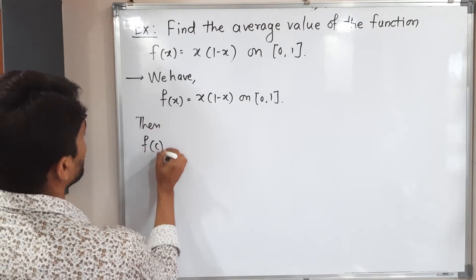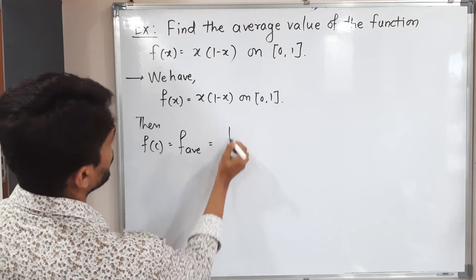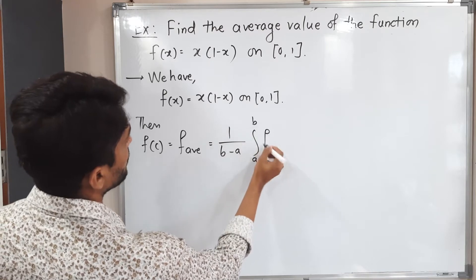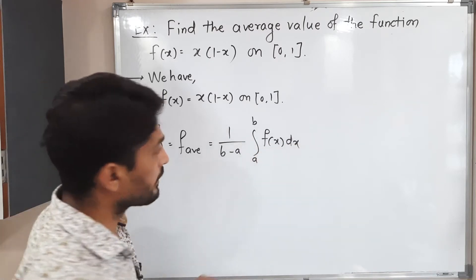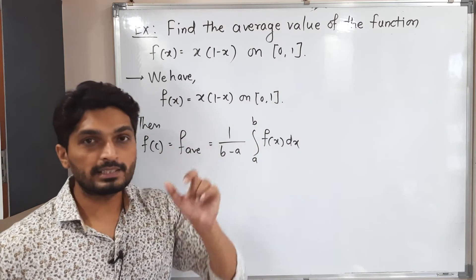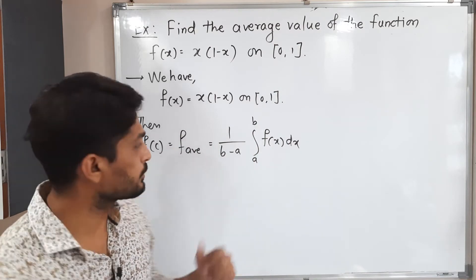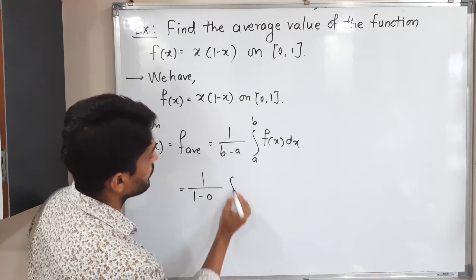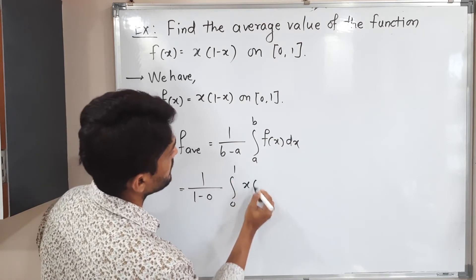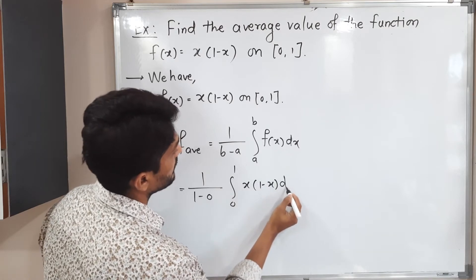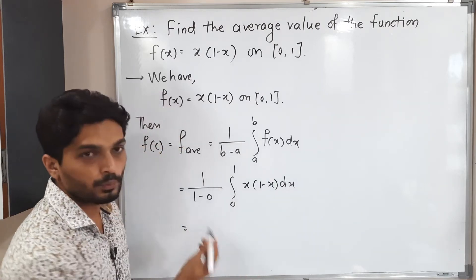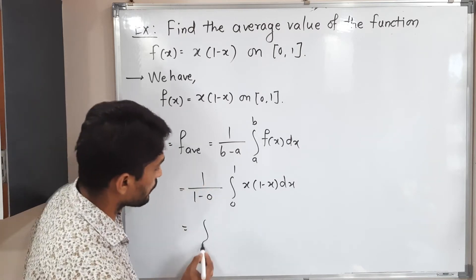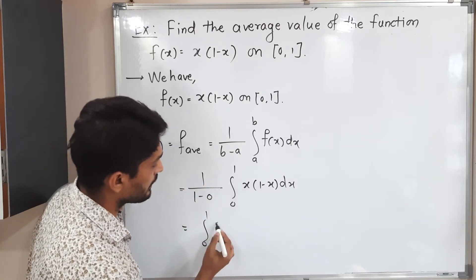Let us use the formula. The formula is: f(c), that means the average value of f, is equal to 1 upon (b minus a) times the integration from a to b of f(x) dx. What is a and what is b? We have interval [0, 1], so a is 0 and b is 1. Let us put the values: 1 upon (1 minus 0), integration from 0 to 1 of f(x) = x(1 minus x) dx.